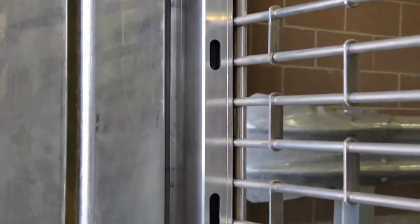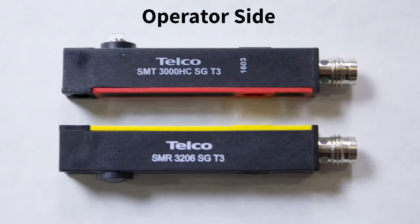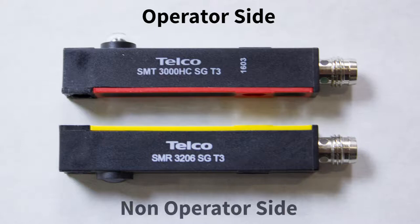To make sure you're placing the photo eye and light curtain on the correct side, there are two tricks. First, the photo eyes are color-coded. The red photo eye goes on the operator side of the door. The yellow photo eye goes on the non-operator side of the door.